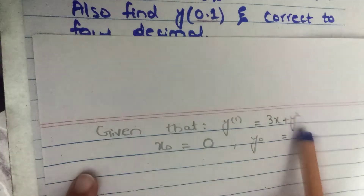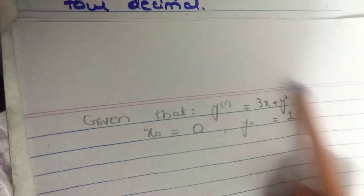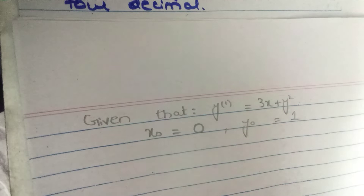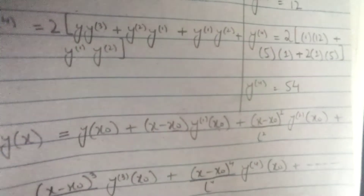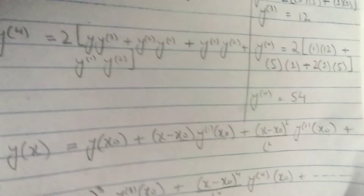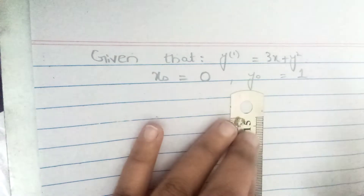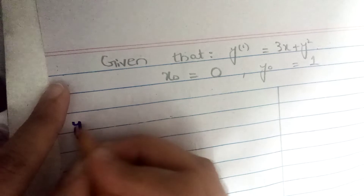I have already written what things are given to us — I've written it with a pencil. We are given the first derivative, the value of x naught, and the value of y naught. Now, looking at the Taylor's series formula, we can see that we need the derivatives of y. So our next step will be to find the derivatives of y.